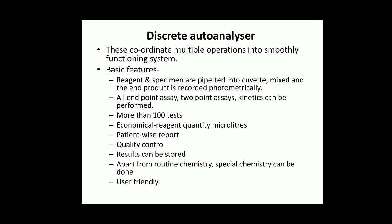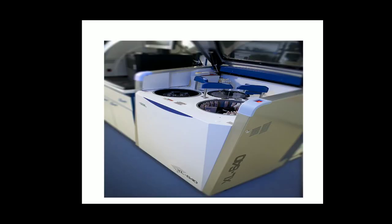Patient-wise reports can be stored; whatever patient report we want, we enter the ID number or patient name and get the report immediately. Quality control — we will look at this in later classes. Results are stored. Apart from routine chemistry, special chemistry can also be done. Routine chemistry includes glucose, urea, creatinine, lipid profile, and liver function tests. Special chemistry includes hormone analysis like thyroid function test, vitamin D, B12, fertility profile. A main feature is that it is user-friendly.